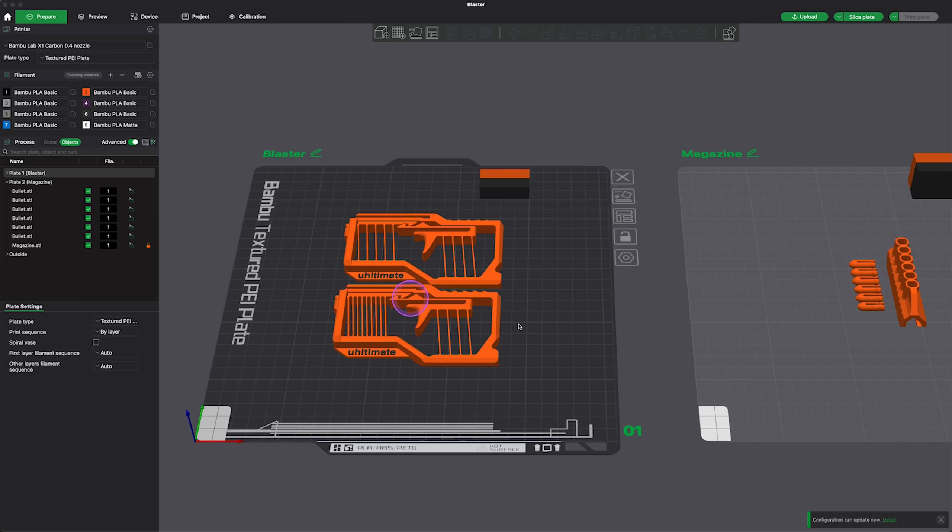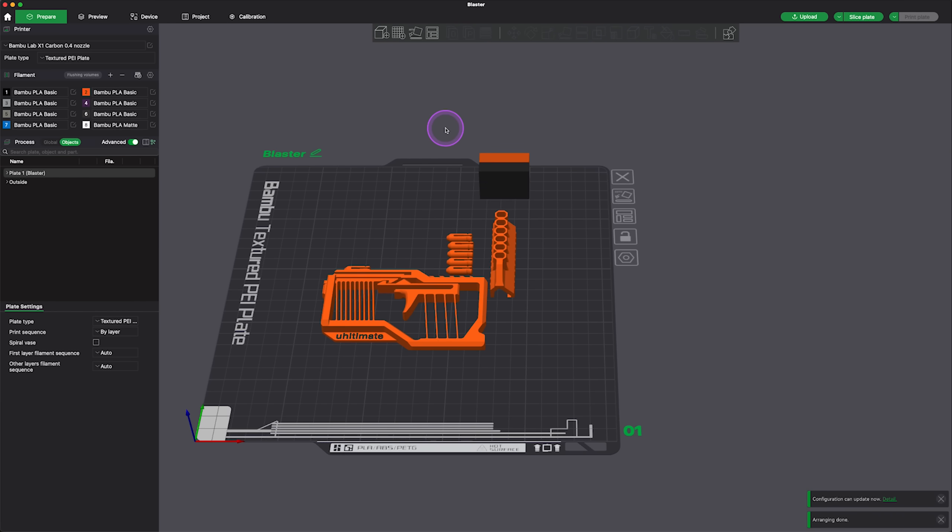Next, you'll need to pick which blaster you want to print. The one with all the struts on the hammer has a bit more range, but it takes more effort to fire. Just take out the other blaster and rearrange the parts. Now we can start printing.